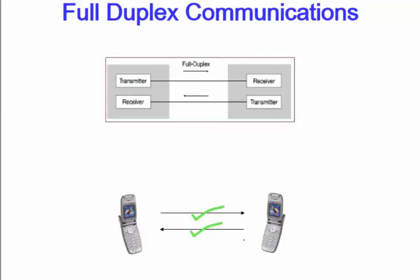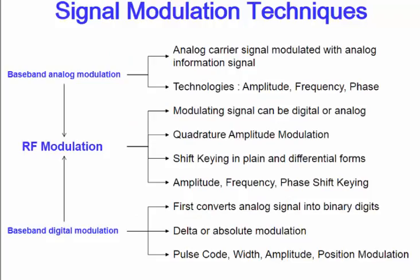Full duplex communications can carry speech in both directions simultaneously, and a normal telephone conversation is a beautiful example of full duplex communications.